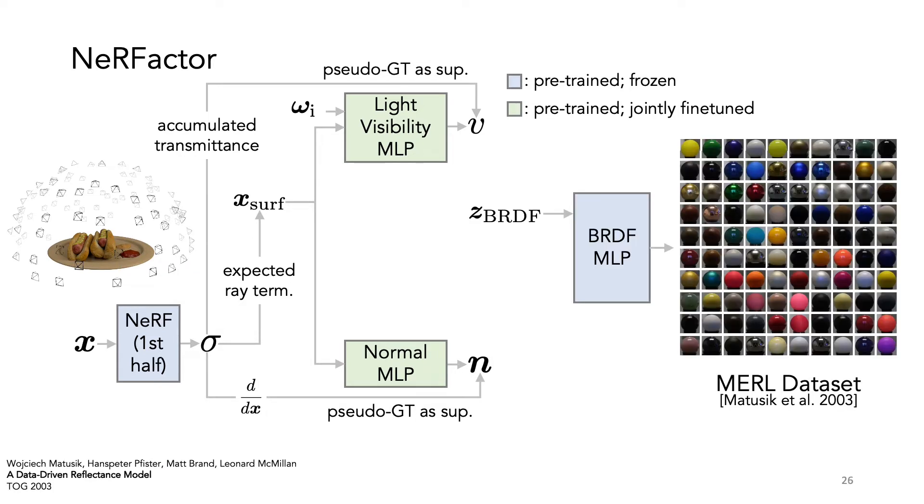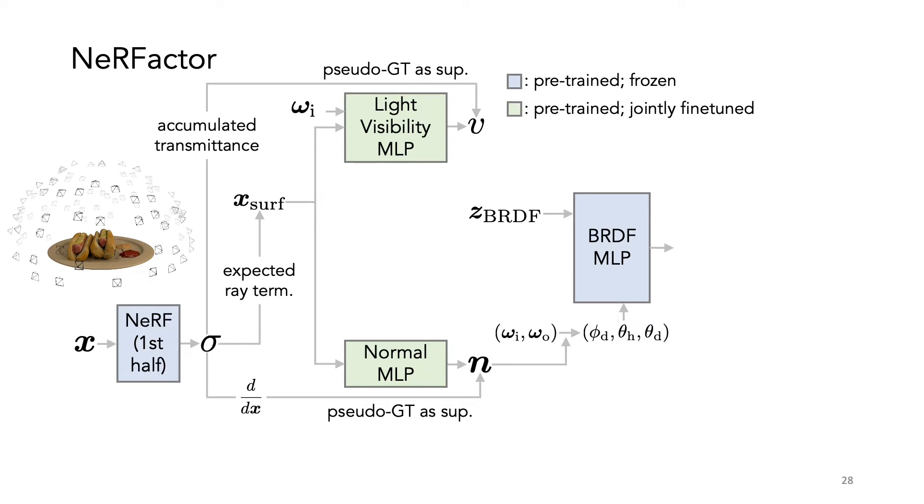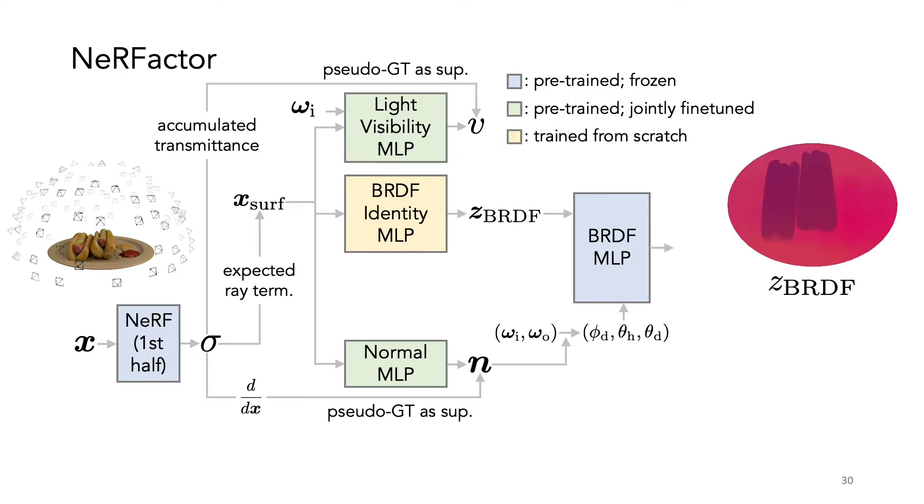We learn data-driven BRDF priors by auto-encoding on the MERL dataset. Because all MERL BRDFs are isotropic, we use the 3 degrees of freedom Rusinkiewicz coordinates. With the trained BRDF MLP, it's trivial to support spatially varying BRDFs. Simply have a BRDF identity MLP predict one latent code at each XYZ location.